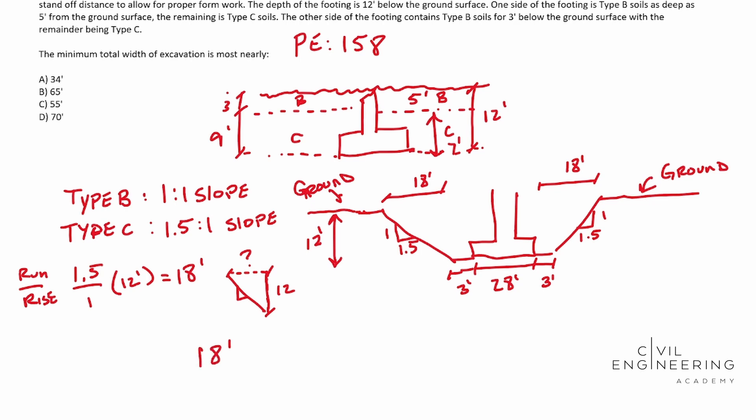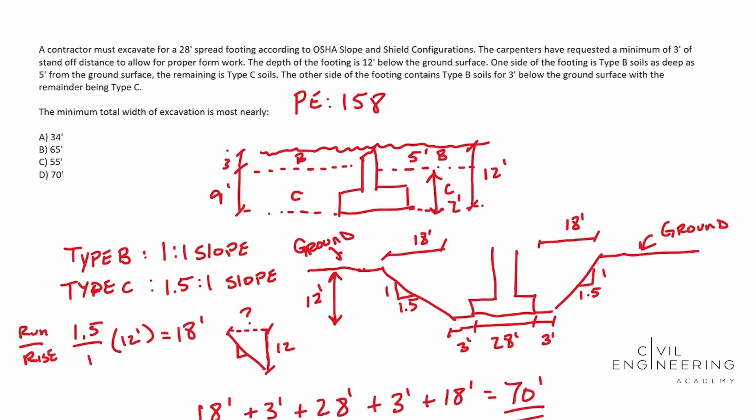So we have 18 feet plus our three feet of standoff distance plus our spread footing, which is 28 feet. Let me rewrite that eight real quick. Plus our three feet of standoff distance plus our 18 feet of slope. And so when we add all that up, you should end up with 70 feet. When you're practicing for this one, I recommend swapping out your soils, your soil types, practicing your slopes, whether you have a better soil on top or on bottom.